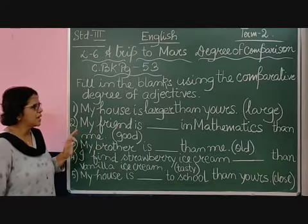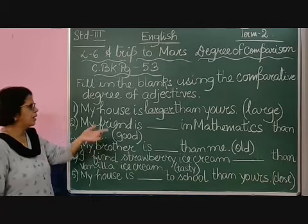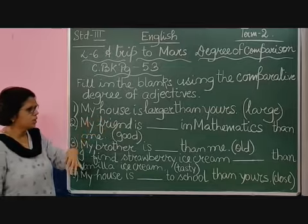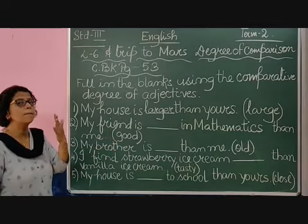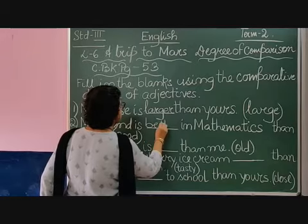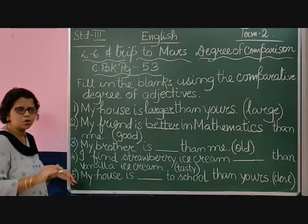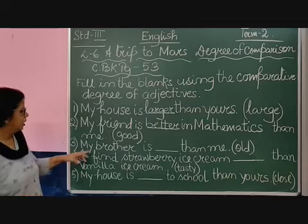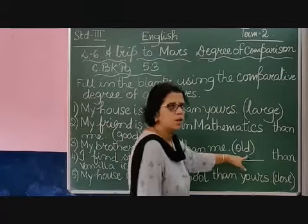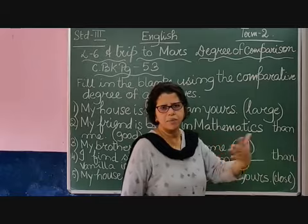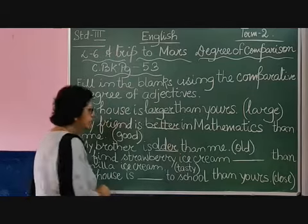Number 2: 'My friend is ___ in mathematics than me.' We are comparing between two people — me and my friend. The word given is 'good.' Just now I told you: 'good' doesn't become 'gooder'; it becomes 'better.' So, my friend is better in mathematics than me. Number 3: 'My brother is ___ than me' and the word given is 'old.' We add ER — so my brother is older than me.